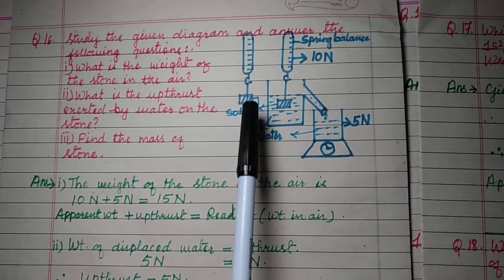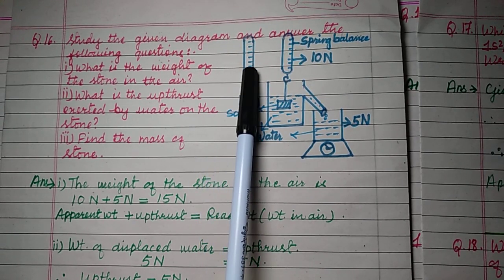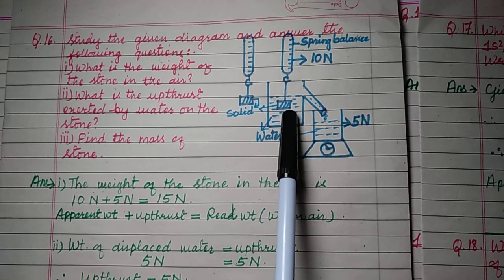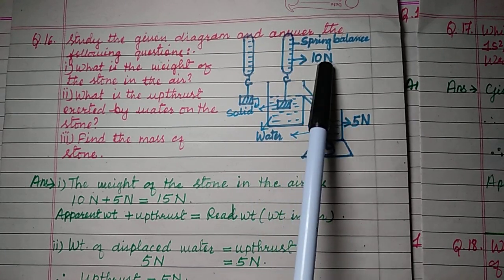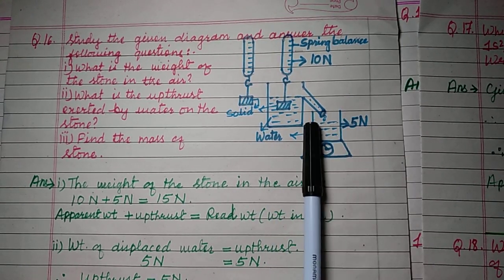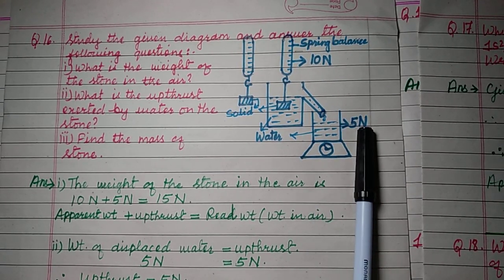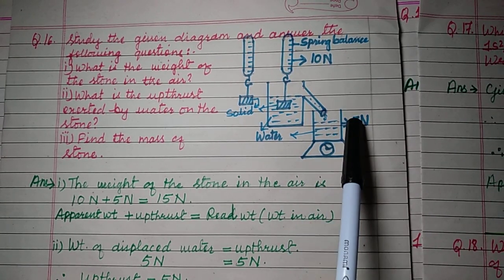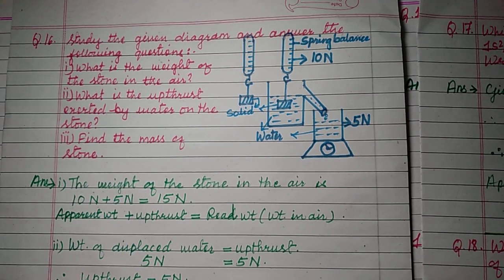From the figure, the weight of the solid is measured in air using a spring balance, and also measured when placed in water. The weight of the solid in water is 10 newton, and the weight of water displaced by the solid is 5 newton. From these two values you have to answer the questions.